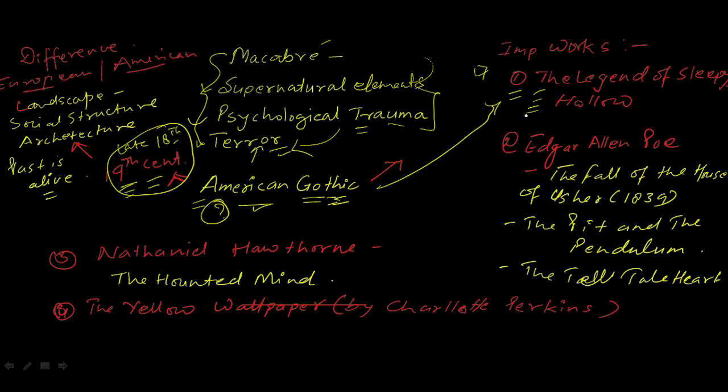Next is Edgar Allan Poe. And this writer is a short story writer—you should remember, short story writer—and he has written a lot of short stories. But some of his important works are The Fall of the House of Usher (this got published in 1839), The Pit and the Pendulum, and The Tell-Tale Heart.